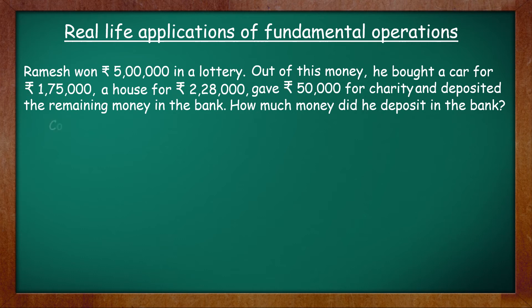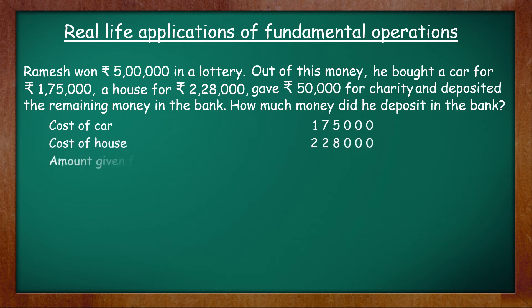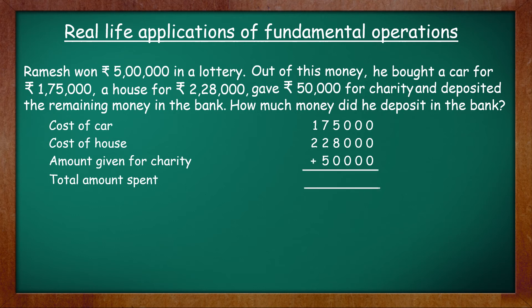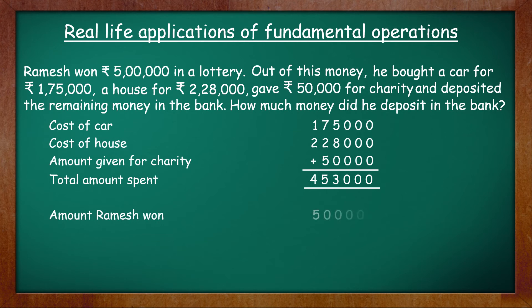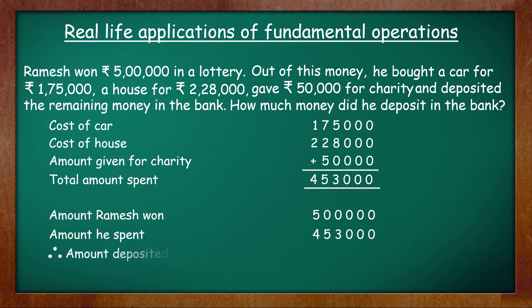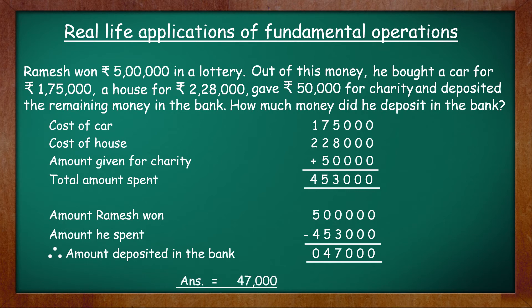Let's begin: cost of car 1,75,000; cost of house 2,28,000; amount given for charity 50,000. Hence, total amount spent — put the plus sign and add. The sum is 4,53,000. Now this amount has to be subtracted from the amount Ramesh won in the lottery: amount Ramesh won 5,00,000; amount he spent 4,53,000. Therefore, amount deposited in the bank — put the minus sign and subtract. The difference is 47,000. The answer is rupees 47,000. Write the unit before the number.